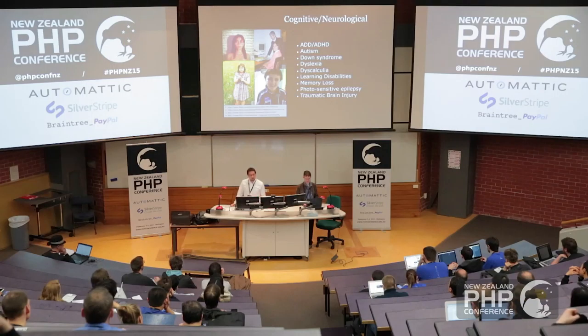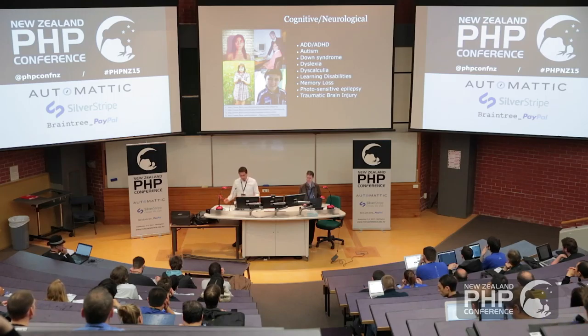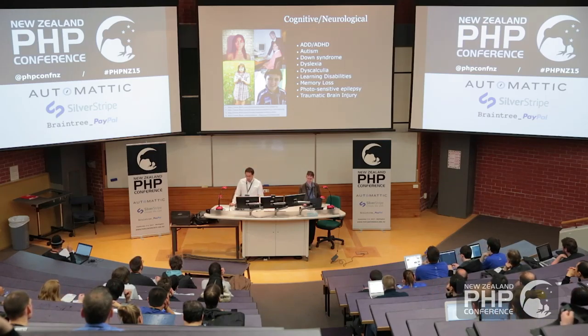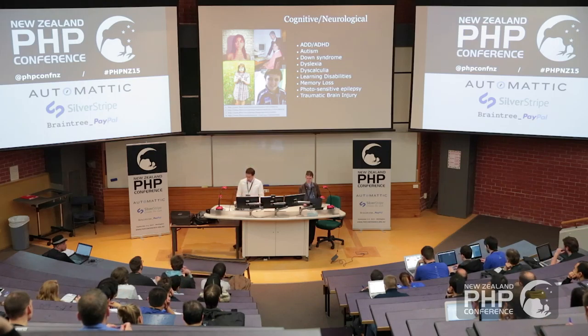On the cognitive or neurological front, this affects reading, parsing of information, interacting with information, and visual layouts. Conditions include ADD, autism, Down syndrome, dyslexia, and dyscalculia — which is like dyslexia but for numbers and maths. Simple learning disabilities and reading disabilities — a variety of these cognitive conditions — will impact somebody's ability to read or interact with the information that you've put up on your website.